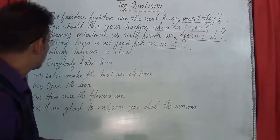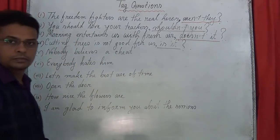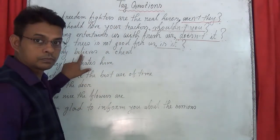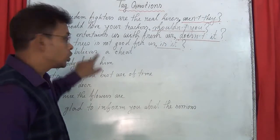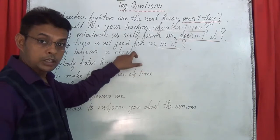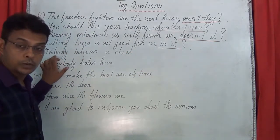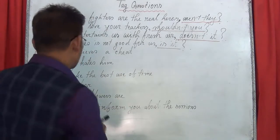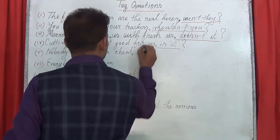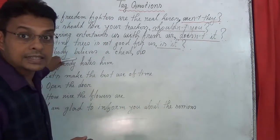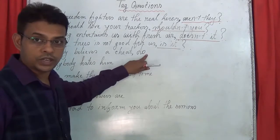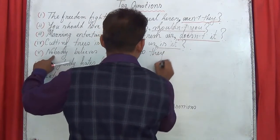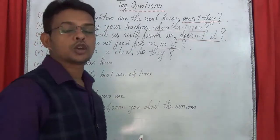Next: 'Nobody believes it.' You can see the main verb 'believes' — with the main verb in present form you would normally use 'does,' but you have to think about the pronoun. 'Nobody' — the pronoun is 'they.' So don't use 'does'; you have to use 'do.' Since the sentence is negative, don't use negative form. The tag is: 'do they?' with a question mark.